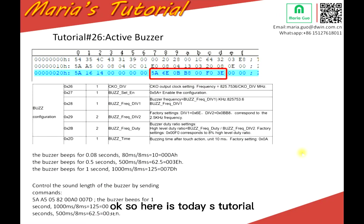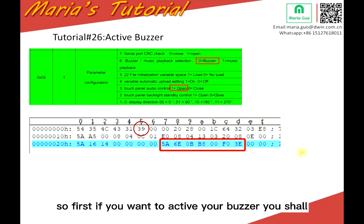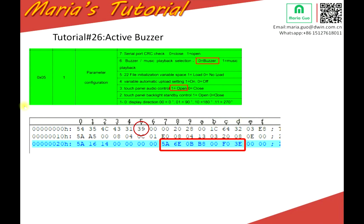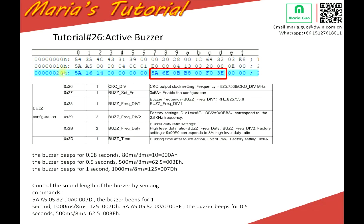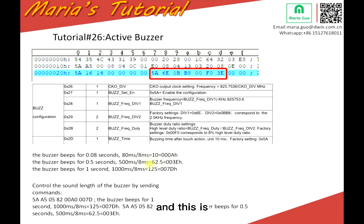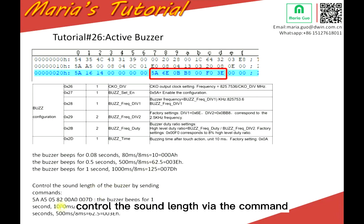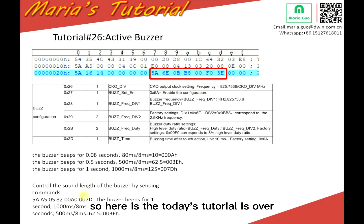So here is today's tutorial. If you want to activate the buzzer, you shall match the 5 location buzzer setting, and then from 27 to 2D you shall match the settings. This is how to set the beeps. You can also control the sound length via command — this is the command we tested in the display. Today's tutorial is over. Thank you. Bye-bye.